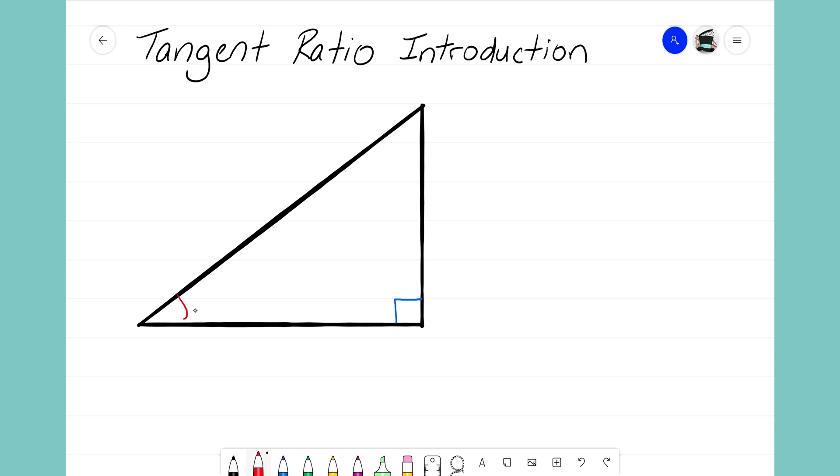Now the angle off to the side here we call that our slope angle. This is the angle that is determining the slope of this line. It tells us how much this line is going to open up and that's what's creating the slope for that line.